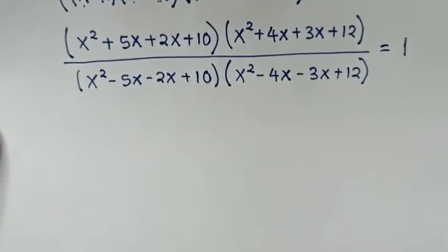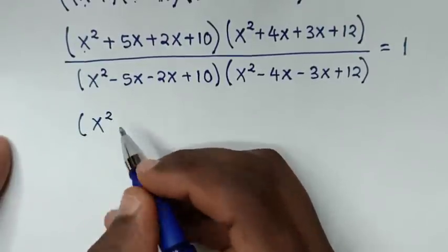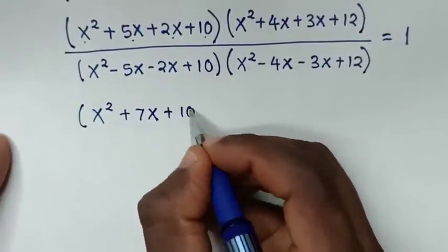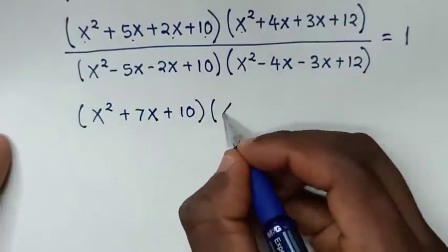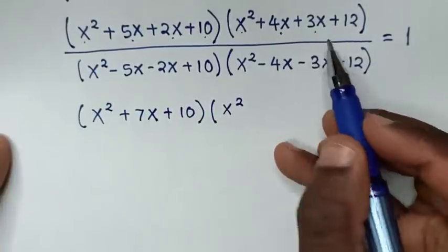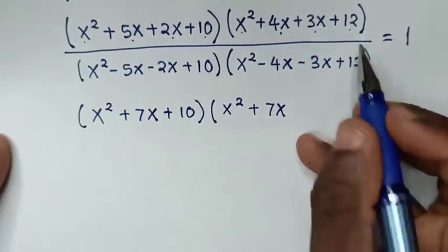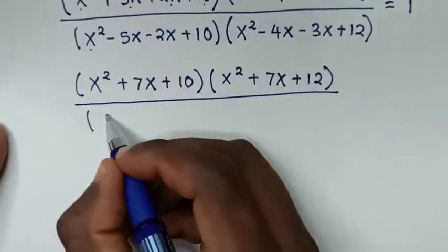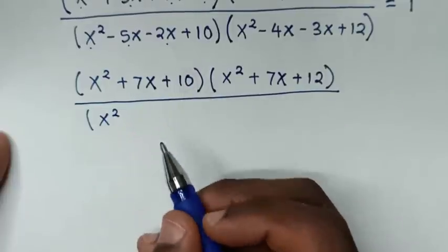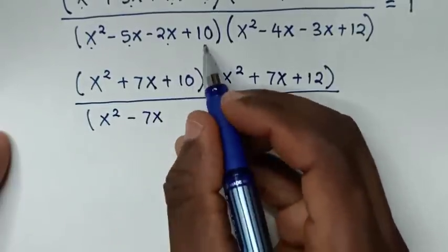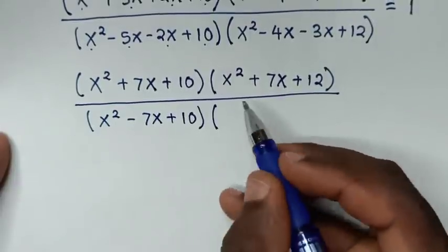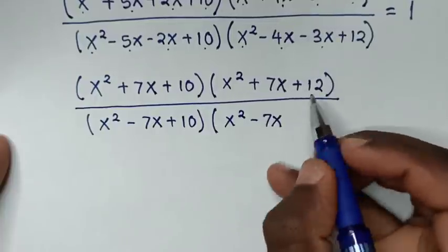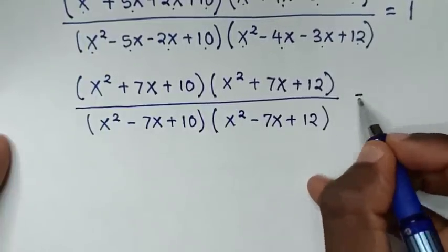In the next step, our equation becomes: (x² + 7x + 10)(x² + 7x + 12) over (x² - 7x + 10)(x² - 7x + 12) equals 1.